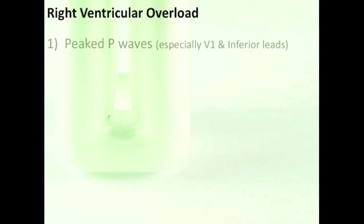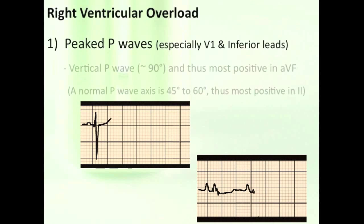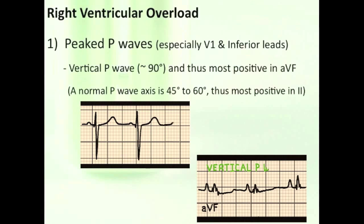How about number one, very peaked P waves, particularly in V1 and the inferior leads. And the P wave axis will look vertical, around 85 degrees. And remember that a normal P wave axis is between 45 and 60 degrees.